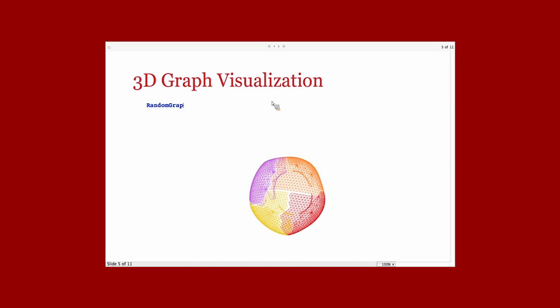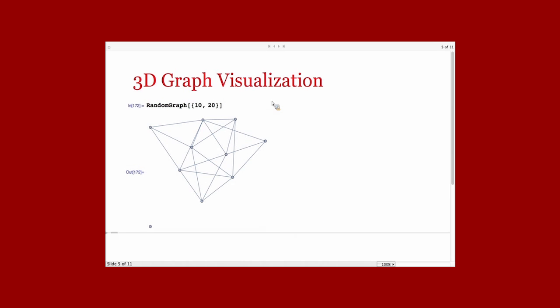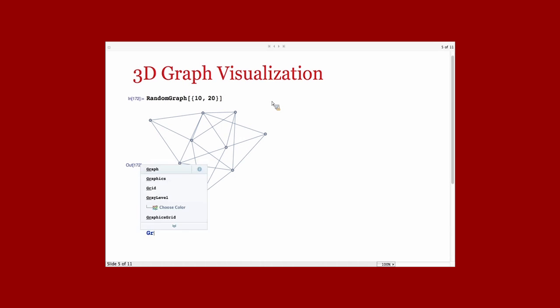If you take a 2D graph, for example, this random graph, you can do Graph3D over it and you get a visualization of the graph in 3D.